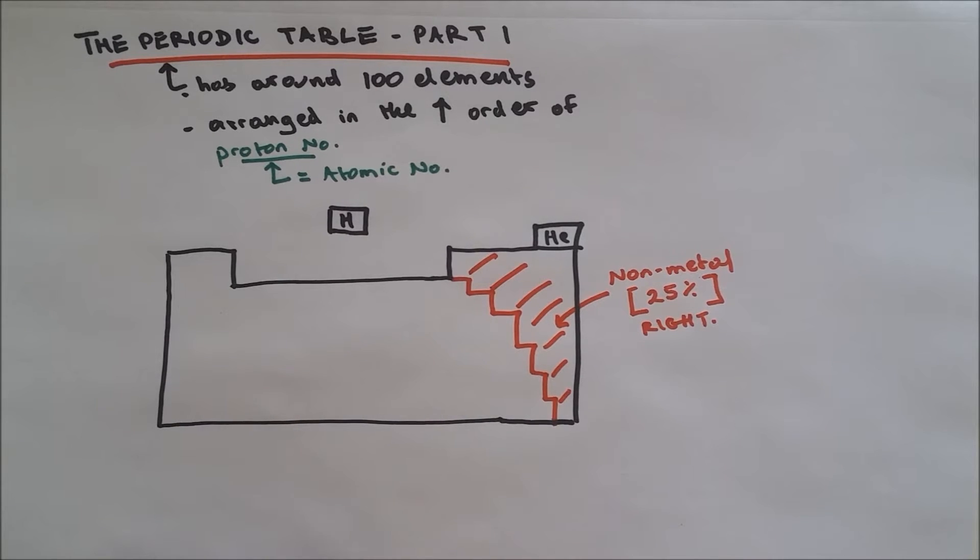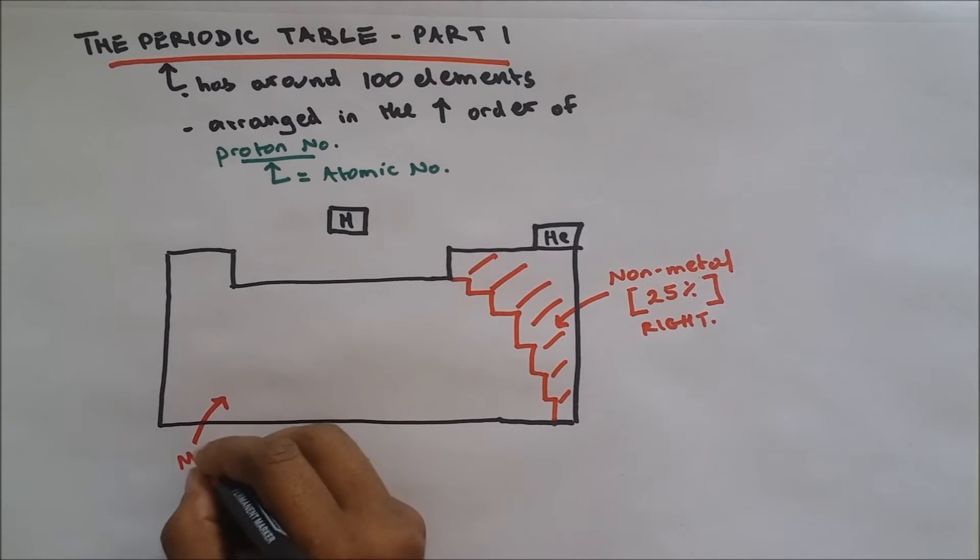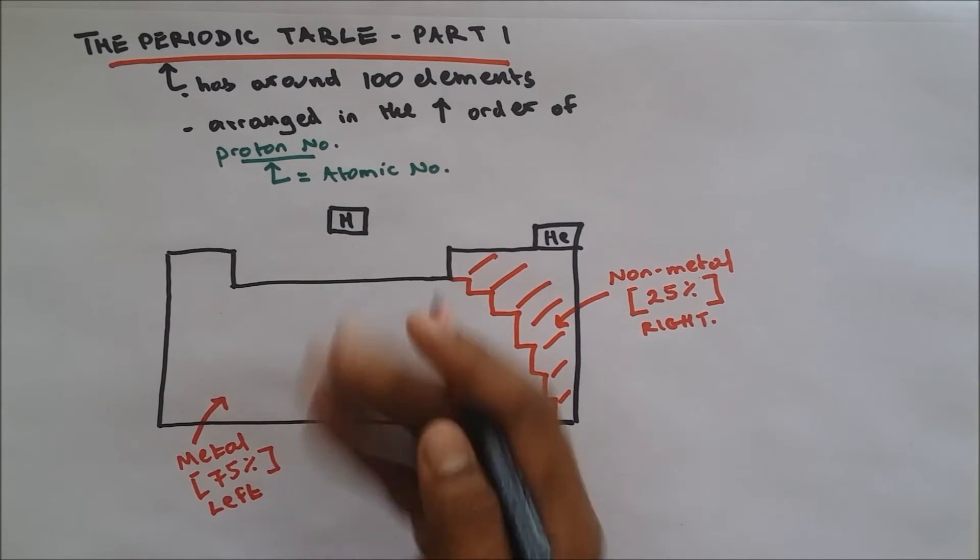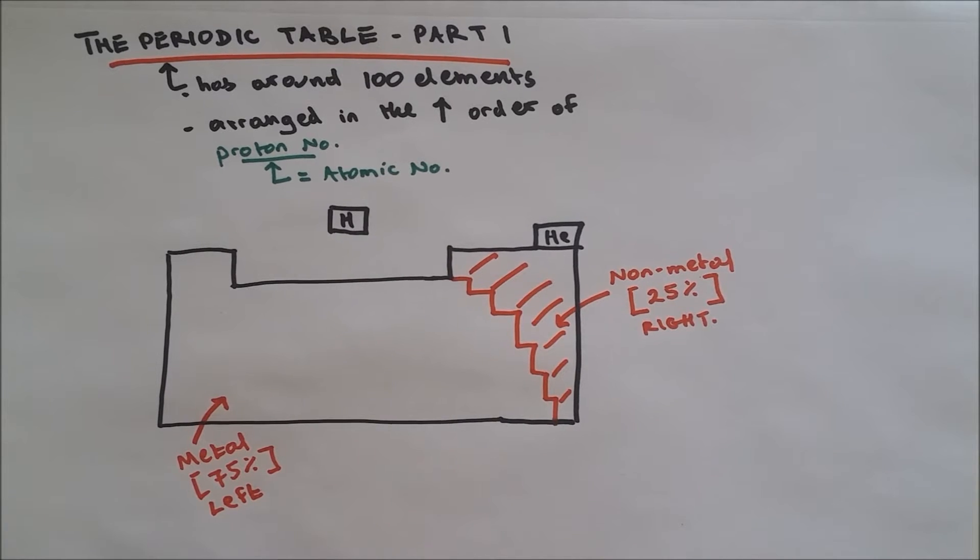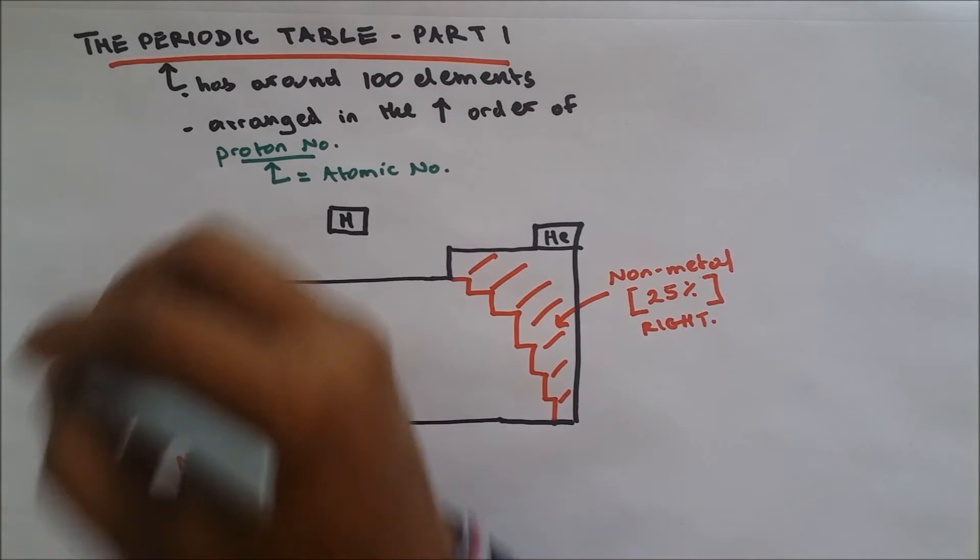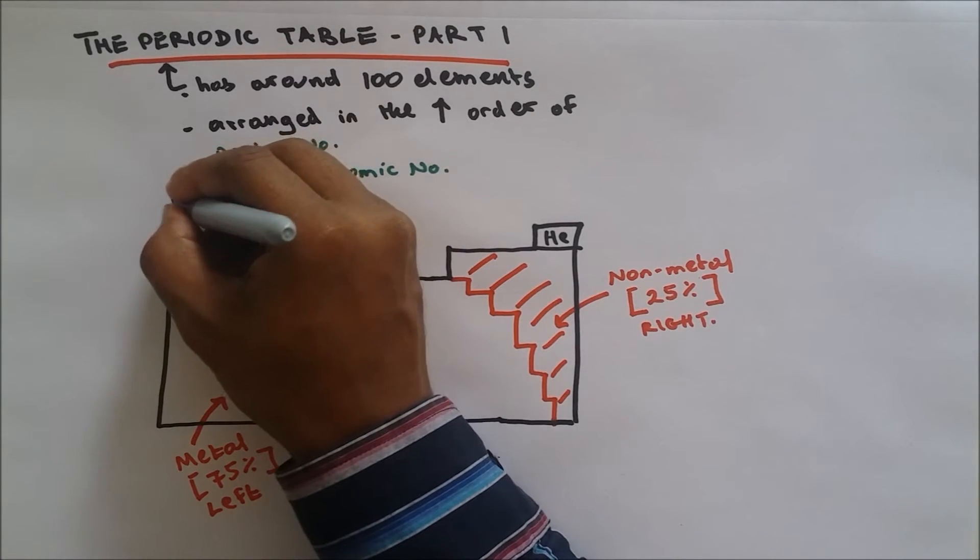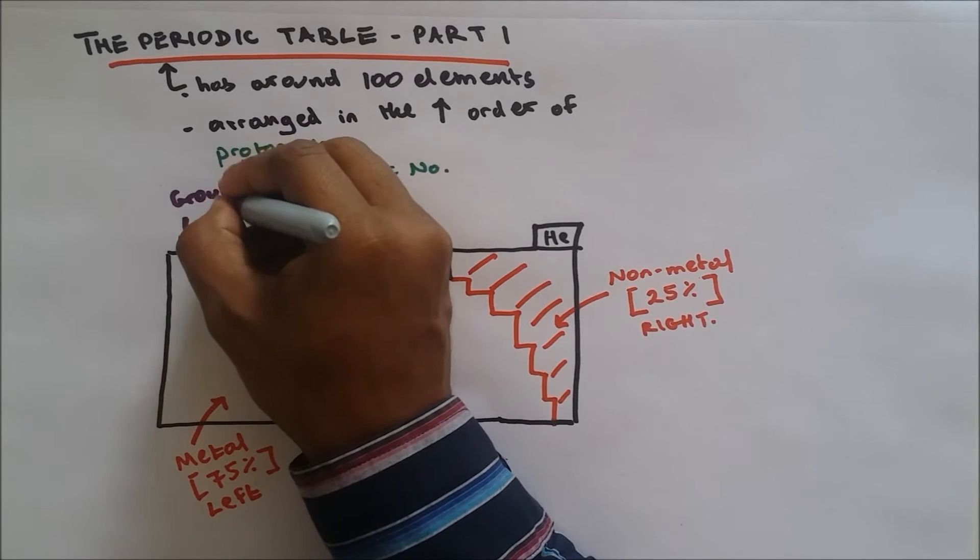The non-shaded parts, these are the metals and it's 75%. And it's found on the left, the middle and left. When it comes to periodic table, only two things are important and these are group and period.